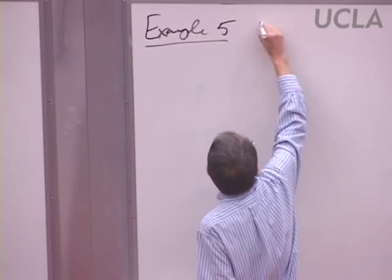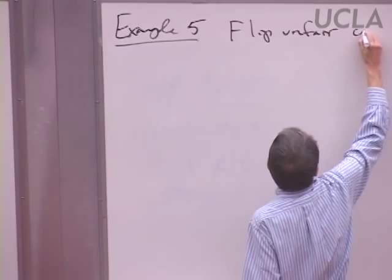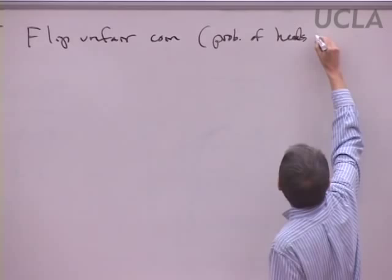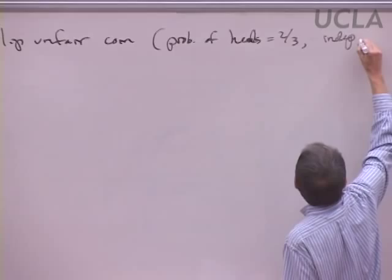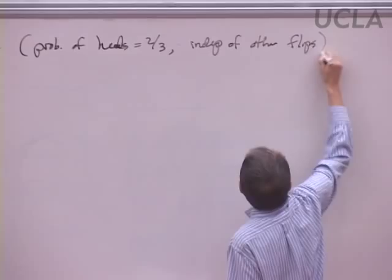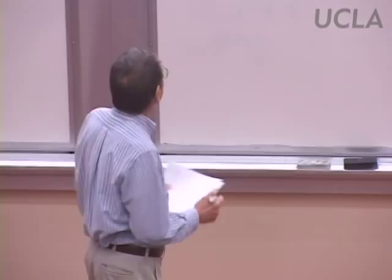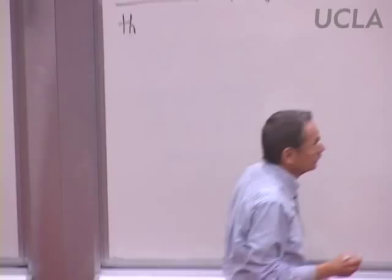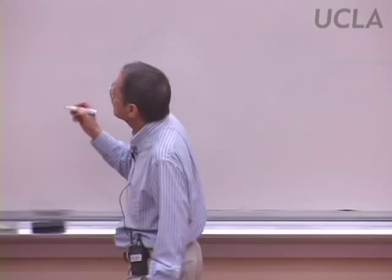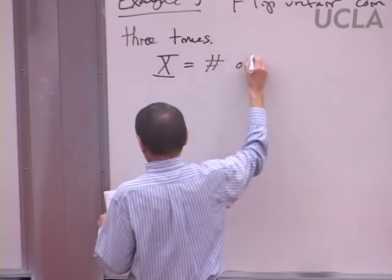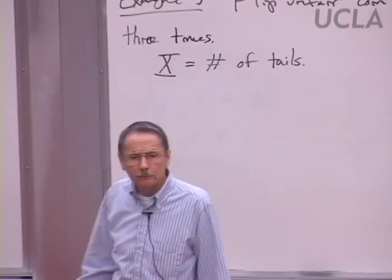Last example, going back to that unfair coin — same one. Probability of heads is two-thirds on each flip, independent of the other flips. A coin has no memory; it doesn't know what happened in previous flips. But instead of flipping it on and on waiting for something to happen, we just flip it three times.